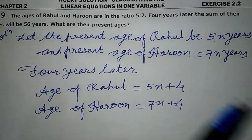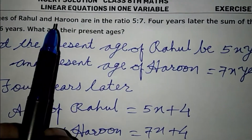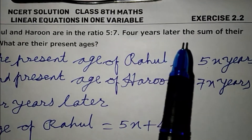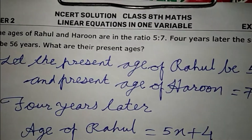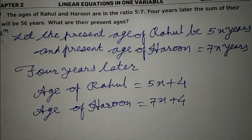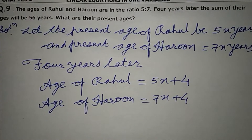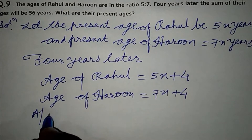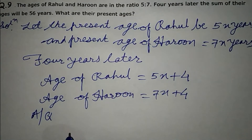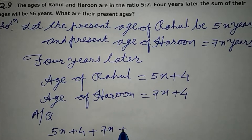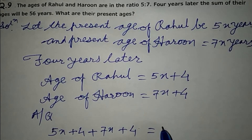The ages of Rahul and Haroon are in the ratio of 5 to 7. According to the question, the sum of their ages four years later will be 56 years. So the equation becomes: 5x plus 4 plus 7x plus 4 is equal to 56.